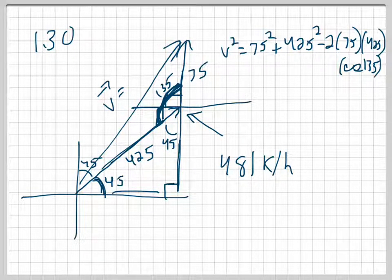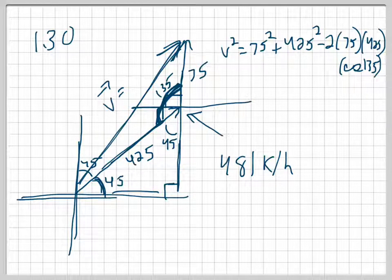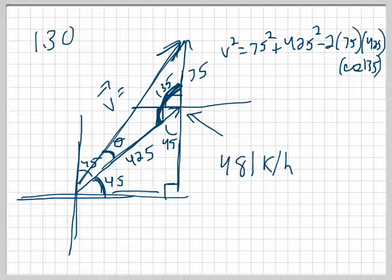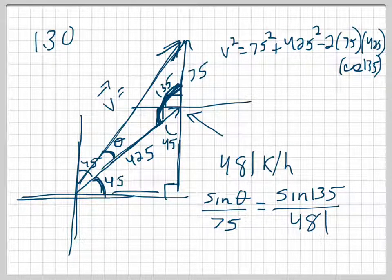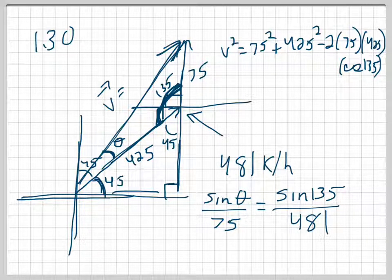That's the speed — I don't have a velocity yet until I get an angle. I need to figure out where this vector is on this grid. The easiest way is to figure out an angle in here — I want to find theta. I'm going to use the law of sines: sine of theta over the opposite side (which is 75) should equal sine of 135 over 481. Cross-multiplying: sine(135) times 75 divided by 481, then inverse sine, gives me about 6.3 degrees. So this angle is 6.3 degrees.